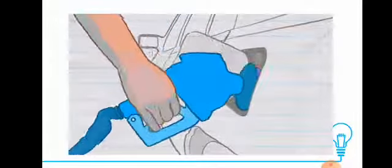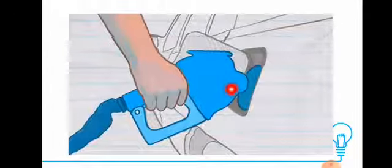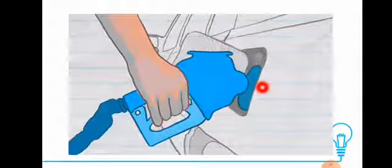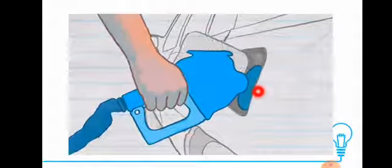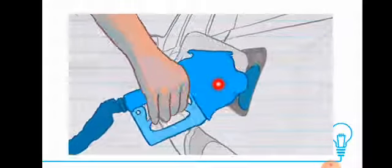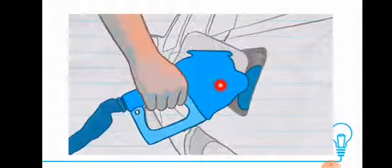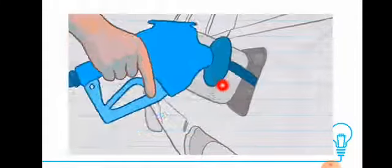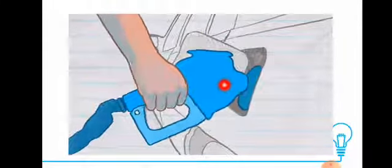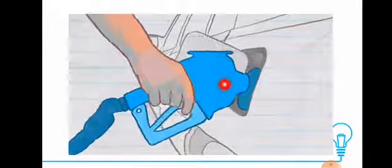Look at the fuel — when your father puts fuel inside his car, the fuel itself has potential energy. When your father runs the car, the potential energy of the fuel changes into kinetic energy and the car moves.